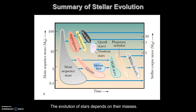Looking at stellar evolution on the HR graph, as time moves forward our main sequence stars have two tracks. We have giants that will eventually go through helium flash, then become AGB stars, then a planetary nebula and white dwarf. Or we can go to supergiants, which lead to supernovas, which can either lead to black holes or neutron stars. The evolution of these stars really depends on their masses.